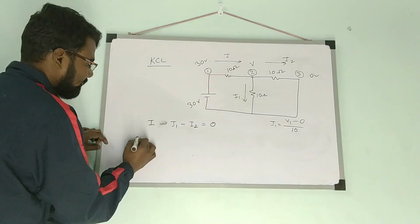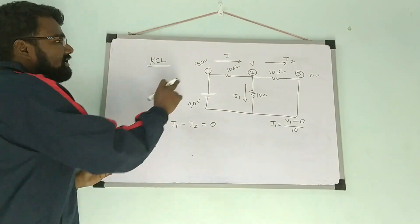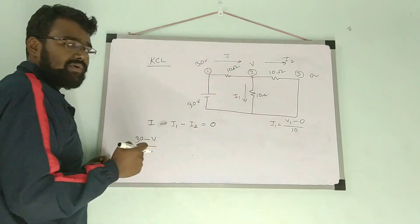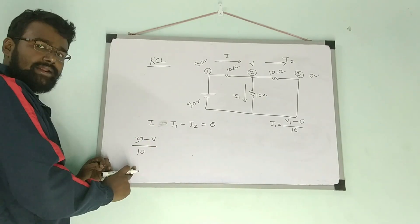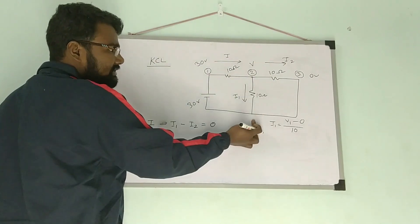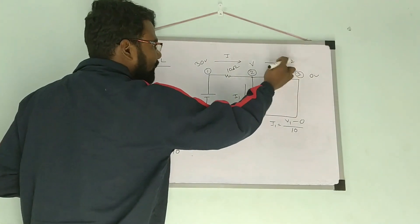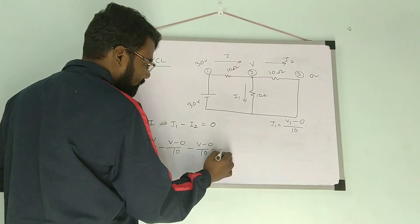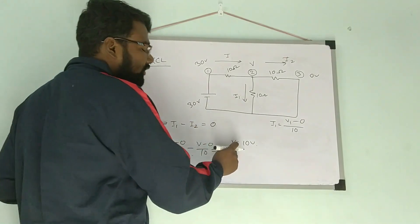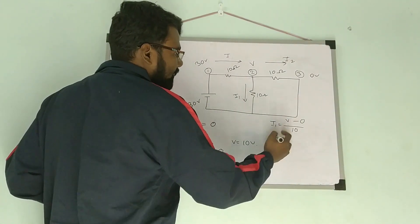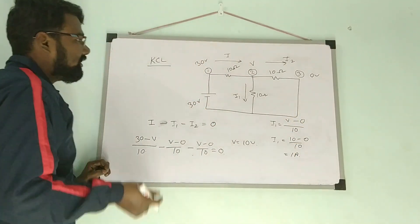The value of I is 30 minus V over 10 ohms. Why 30 minus V? Because the direction of current is from 30 volts to V volts, so 30 is higher than V. So: (30 minus V)/10 minus (V minus 0)/10 minus (V minus 0)/10 equals zero. By solving this equation, V equals 10 volts. So I1 equals 10 minus 0 over 10, which equals 1 ampere. This is Procedure 1.